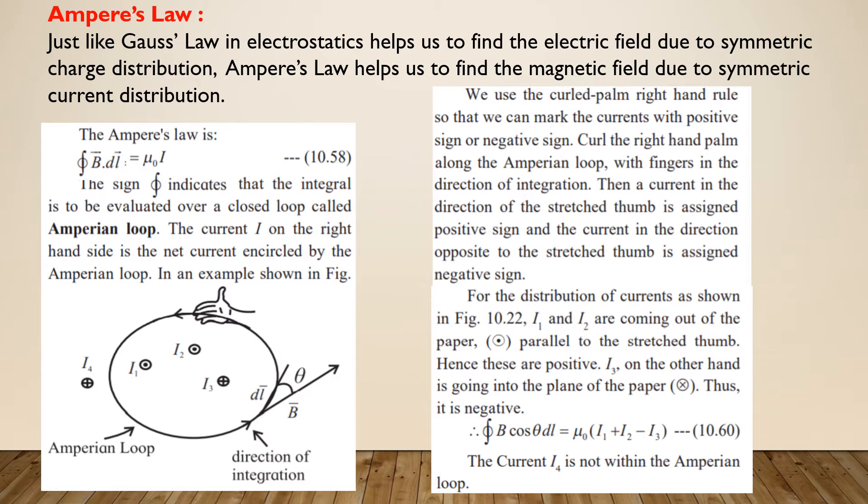Here, the closed loop is called Ampere's loop, which is an imaginary loop just like Gaussian surface. Let us consider one example. As shown in the figure, the Ampere's loop encloses three current elements I1, I2 and I3, whereas the fourth element I4 is outside the loop.